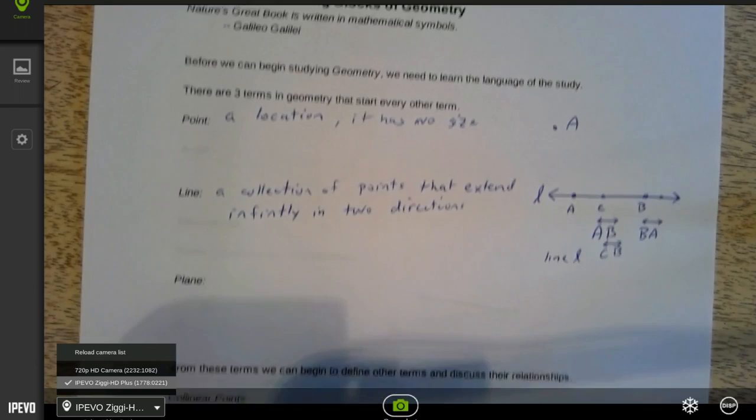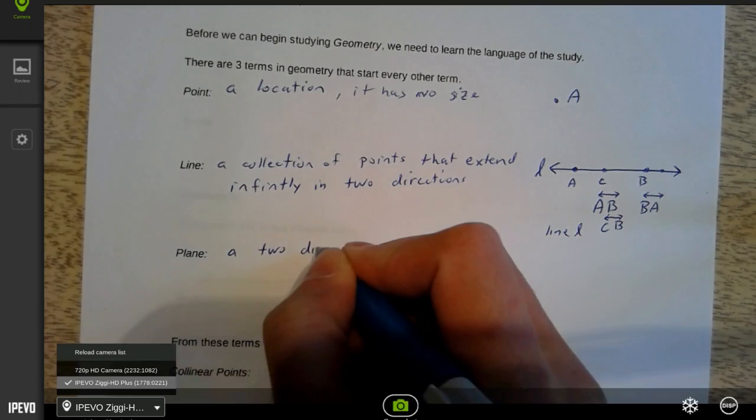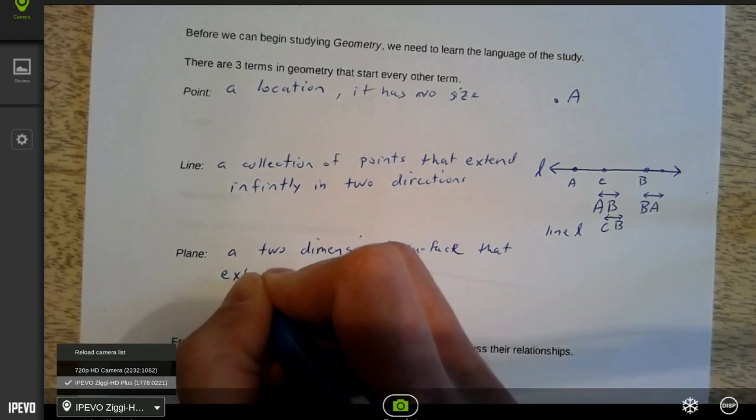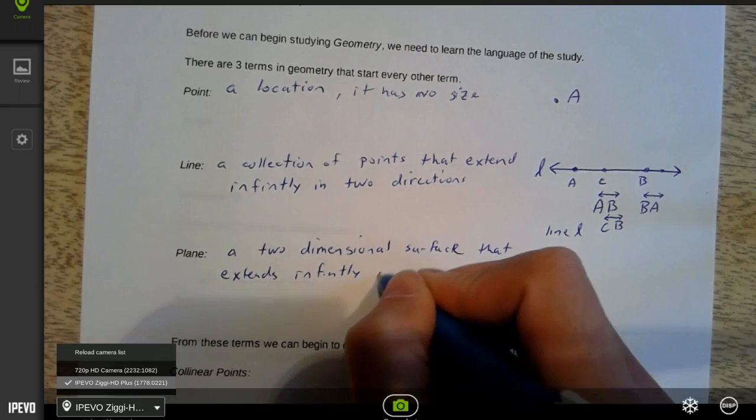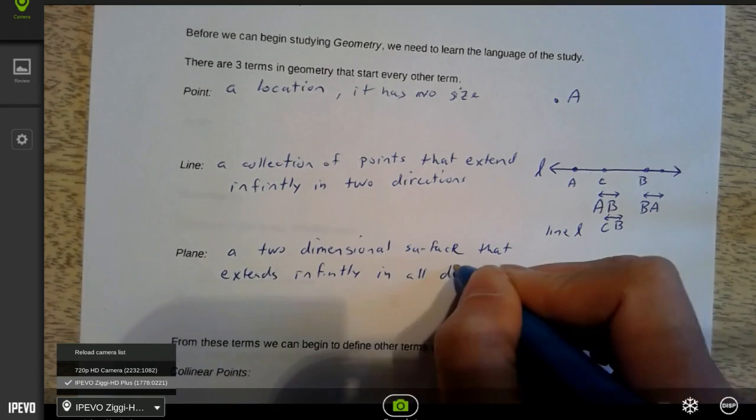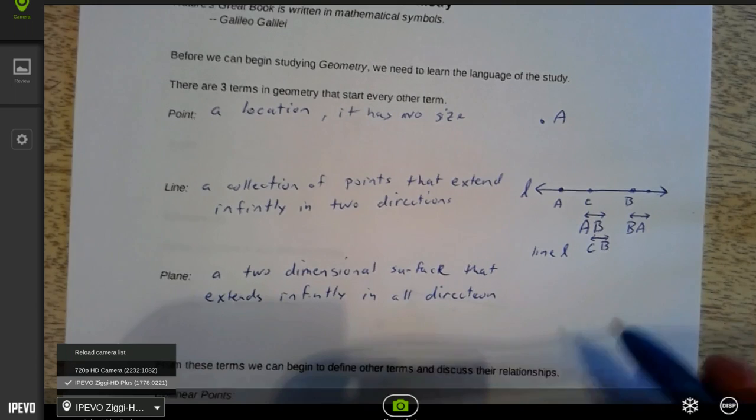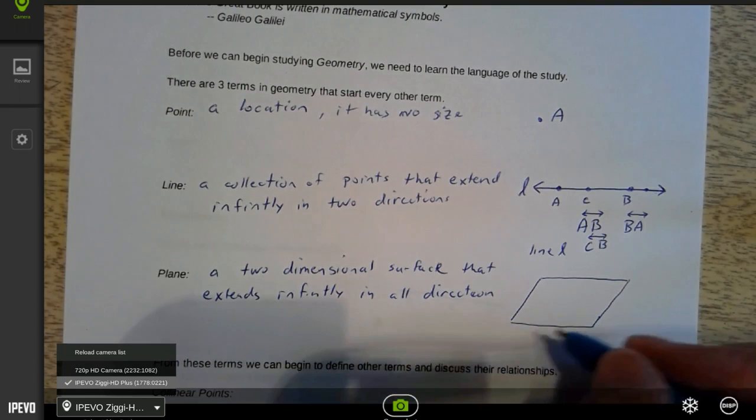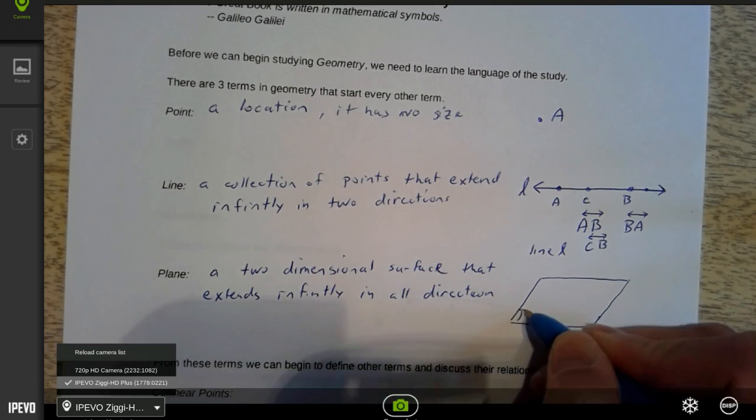A plane. A plane is a two-dimensional surface that extends infinitely in all directions. So a plane is a flat surface. You can think of your desktop as being a representation of a plane. Usually when we represent planes in drawings, we tend to make them look like parallelograms. So it can be a little confusing sometimes. Sometimes they'll name a plane using just a little italicized capital letter. So this might be plane P.